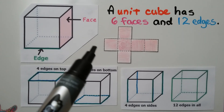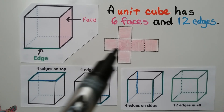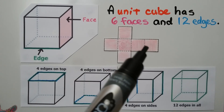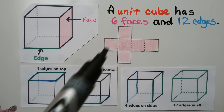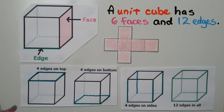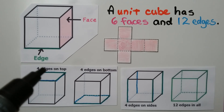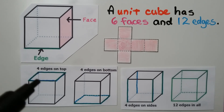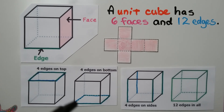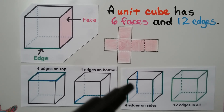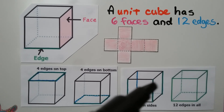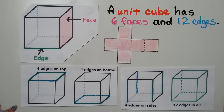If we unfolded the cube, this is one of the ways it would look. We have six squares — those are the six faces. It has four edges on top, four edges on the bottom, and four edges on the sides, giving it twelve edges in all.